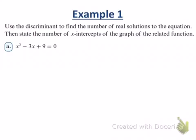So, use the discriminant to find the number of real solutions to this equation. Then state the number of x-intercepts of the graph of the related function. Now, is this telling us to find the x-intercepts? No. It's not. What is it telling us to do? To find how many solutions. Number of real solutions. The number of real solutions is the same as the number of x-intercepts, right? So we're going to use the discriminant, which is b² - 4ac.